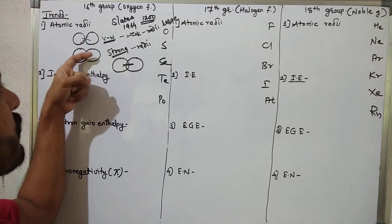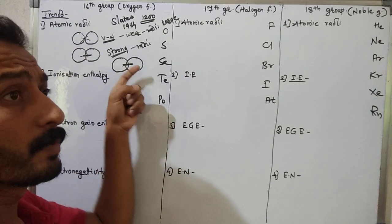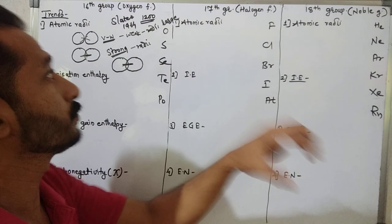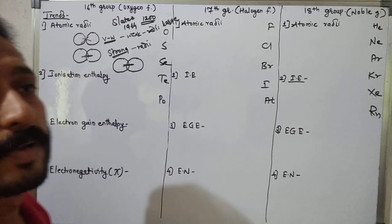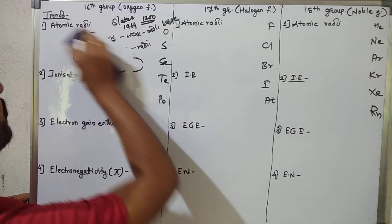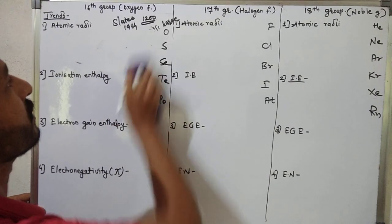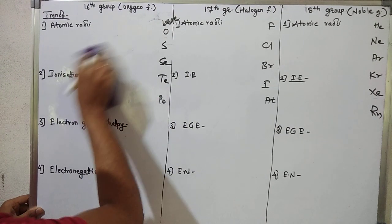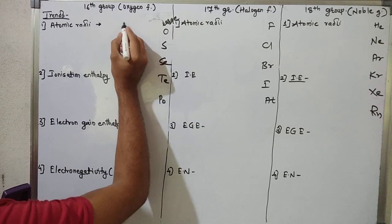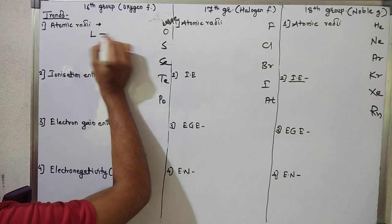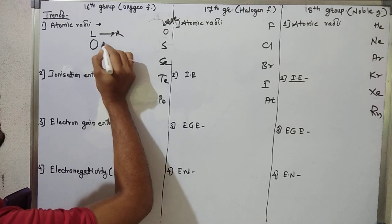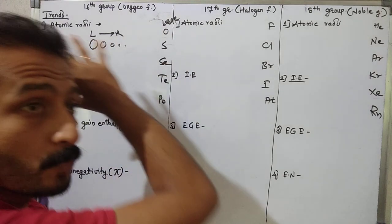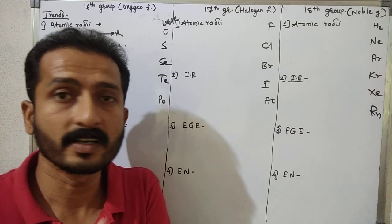So we can discuss van der Waals radii, covalent radii, and ionic radii. Slater derived empirical average values for all these radii, and we use all these radii accordingly. Now, for atomic radii in the 16th group: from left to right, the size decreases.